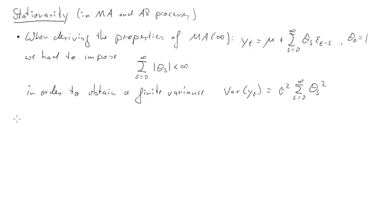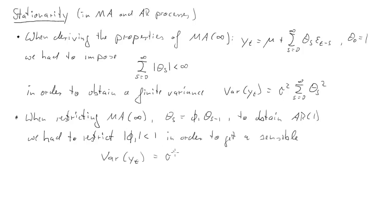When we then linked the MA(∞) process, or a restricted version of the MA(∞) process, where the restriction was θₛ equals φ₁ times θₛ₋₁, and used that restriction to obtain an AR(1) process, we then had to impose a restriction on θ₁. In particular we had to impose that the absolute value of θ₁ was smaller than 1, and again that was to ensure that the variance of the process, which now was established to be σ² times 1 over (1 - φ₁²), that this was a sensible value.